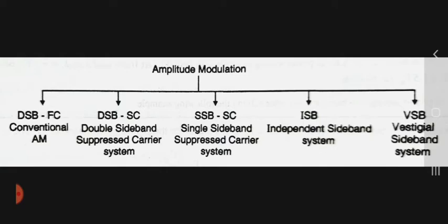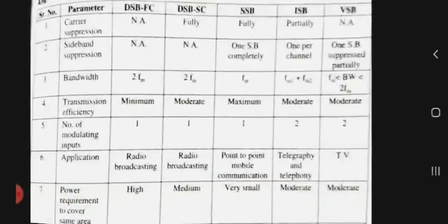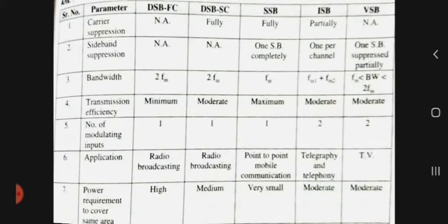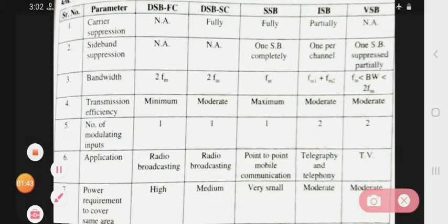Now we will see this comparison, which you have to detail in exam questions — that is the comparison points one by one. So see the comparison points; first parameter is carrier suppression, and the types of AM based on frequency spectrum.